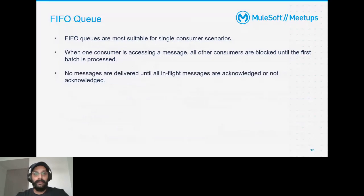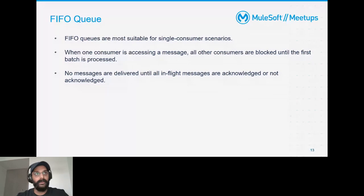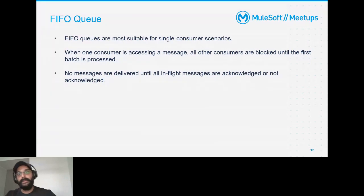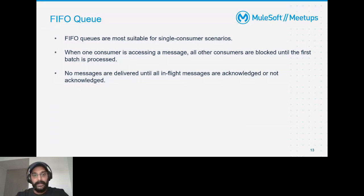FIFO queues — first in, first out — are more suitable for single consumers. When a consumer is accessing a message, there is an attribute called ID that protects consumers from consuming the same message, avoiding duplication. Until a message is acknowledged or not acknowledged, messages are not delivered and remain in-flight.